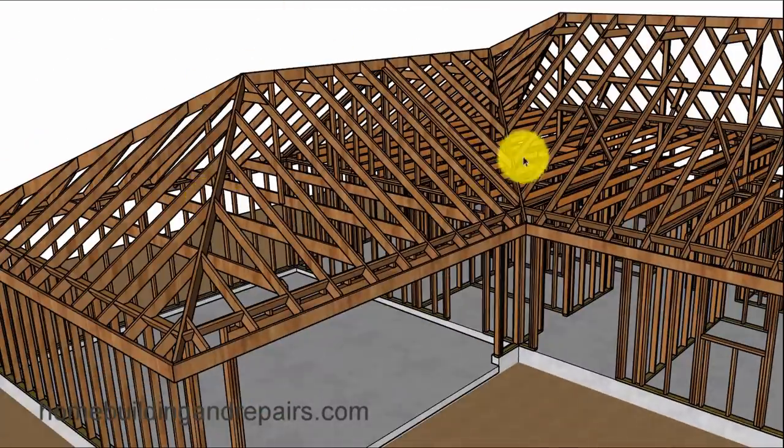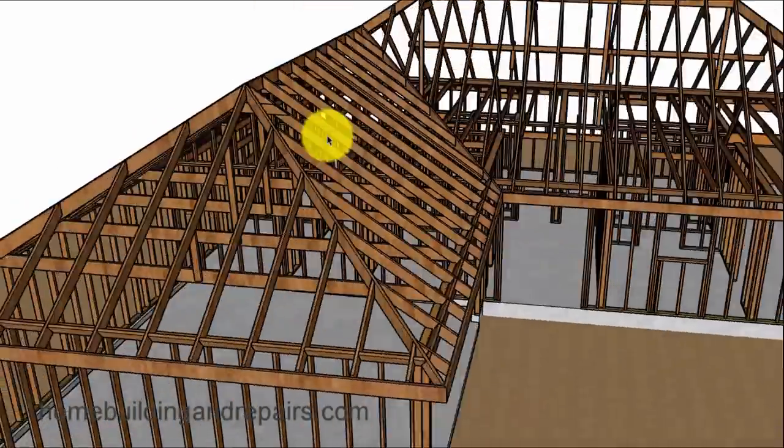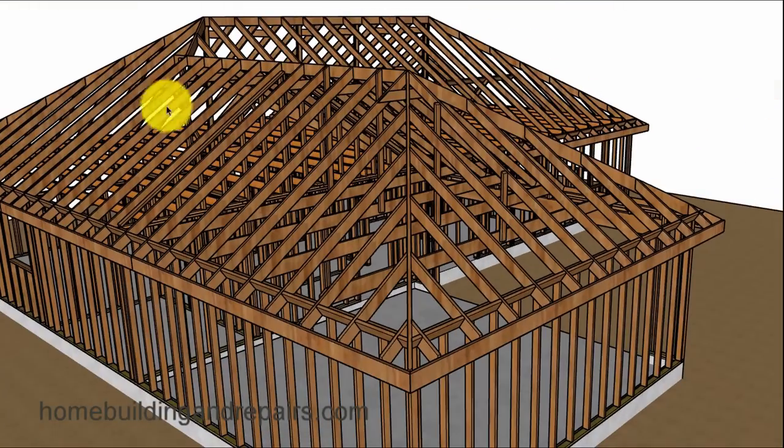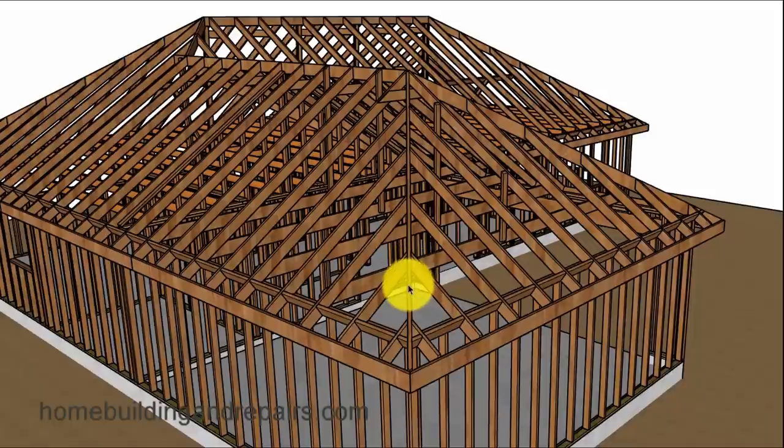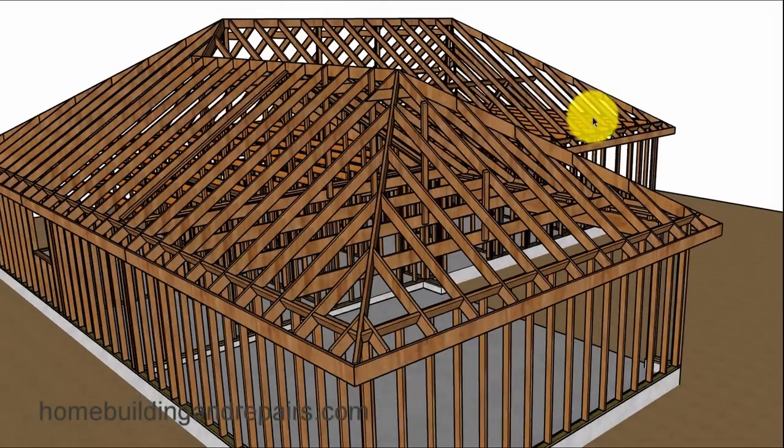Valley, hip. Hips and valleys are usually the same length of lumber, by the way. For those of you who just assemble truss roofs all the time, you wouldn't need to know that. But in conventional framing, the hips and the valleys are usually the same length. Might need to be cut a little different, but same size.